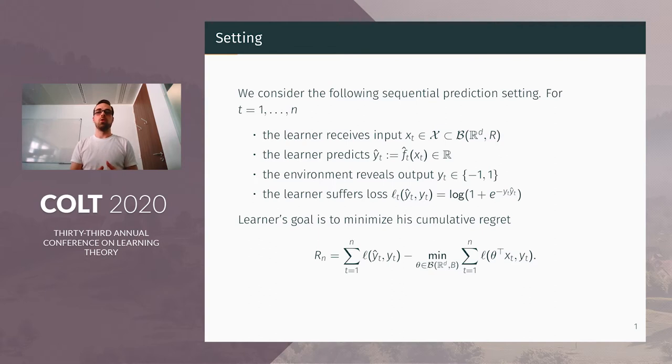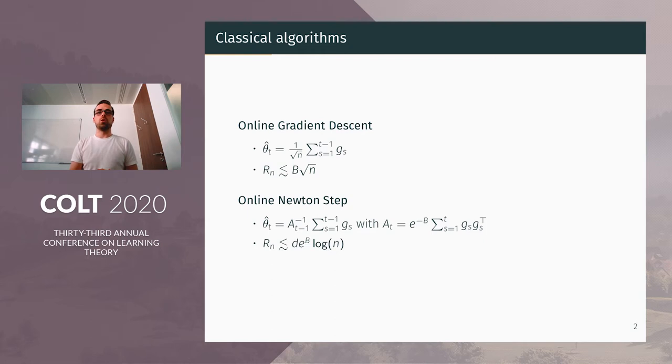The comparator class is the linear functions with L2 norm bounded by B. So if I rephrase the goal, it is to predict as well as the best linear function with L2 norm bounded by B.